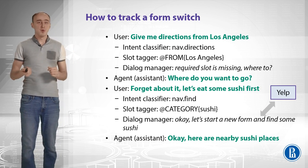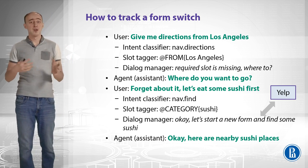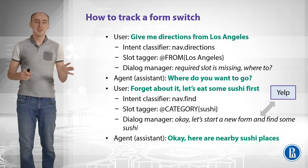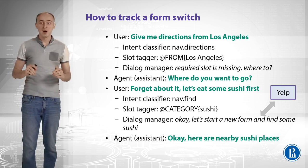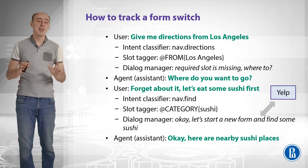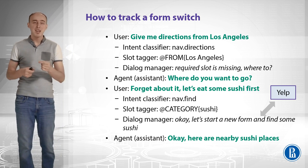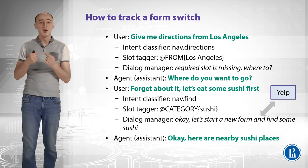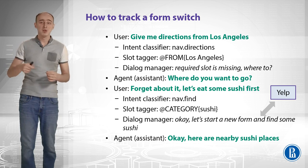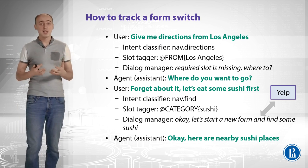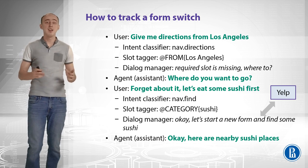How do we track a form switch? Imagine the user first says 'Give me directions from LA,' we ask where they want to go, and then the user says 'Forget about it, let's eat some sushi first.' We need to understand that the intent has changed and forget all previous slots and information. The intent classifier gives us 'navigation_find' with a category slot valued 'sushi.' We query a database like Yelp, the dialog manager starts a new form, and the assistant outputs: 'Here are nearby sushi places.' We track the form switch when the intent changes, for example from 'navigation_directions' to 'navigation_find.'